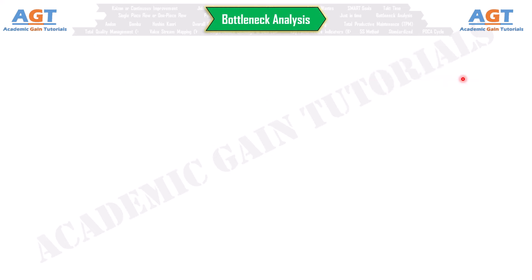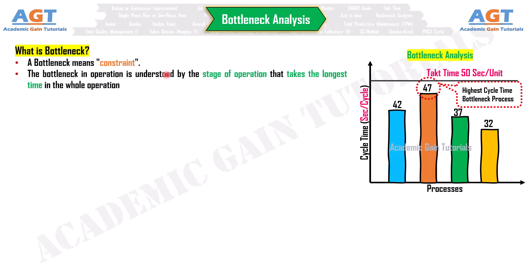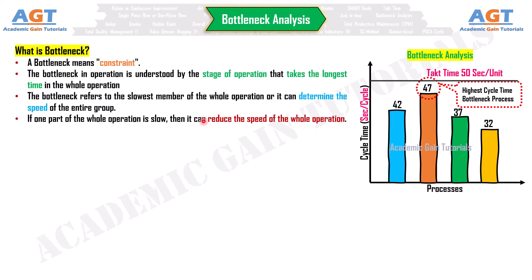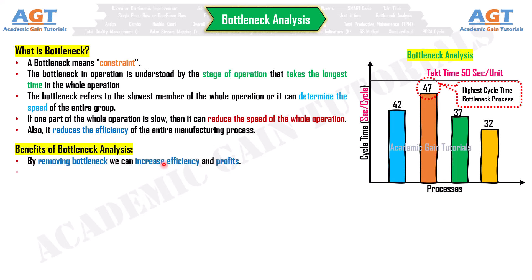Number 13: Bottleneck Analysis. A bottleneck means a constraint — the stage of operation that takes the longest time in the whole operation. The bottleneck refers to the slowest member of the whole operation and can determine the speed of the entire group. If one part of the operation is slow, it reduces the speed and efficiency of the entire manufacturing process. Benefits: By removing bottlenecks, we can increase efficiency and profits, optimize cycle time, and increase productivity and plant capacity.